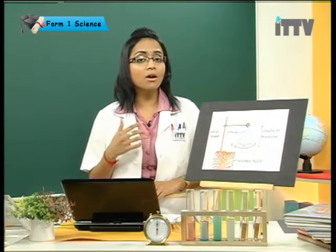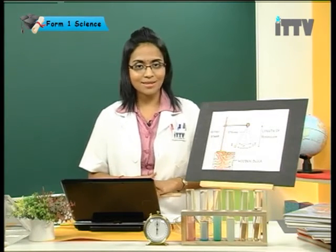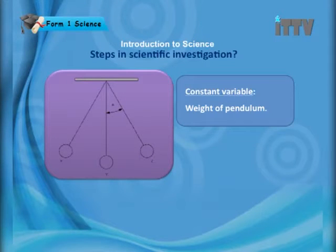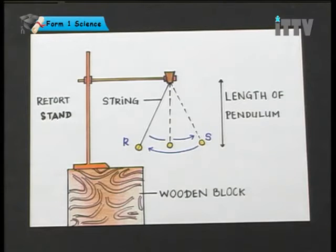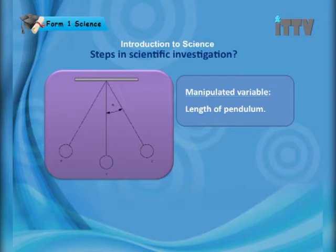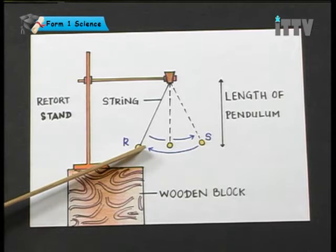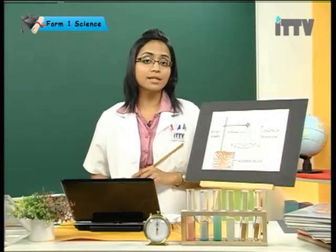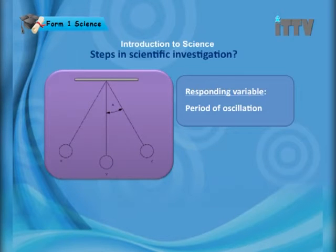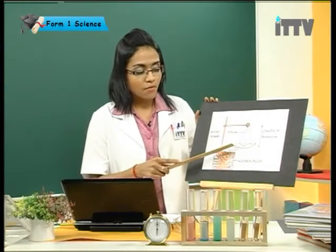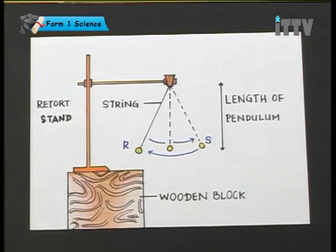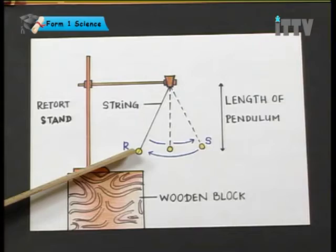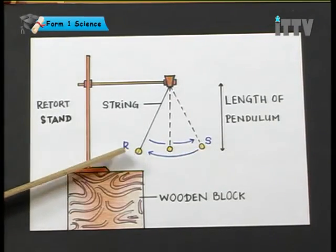Is it true — the longer the length, the longer the time needed for the pendulum? The constant variable, which stays static and does not change, is the weight of the pendulum — we use the same weight. The manipulated variable is the length of the pendulum; each experiment we carry out we change the length of the string. The responding variable is the period of oscillation. An oscillation is when the pendulum moves from R to S and back to R again — this is one oscillation.